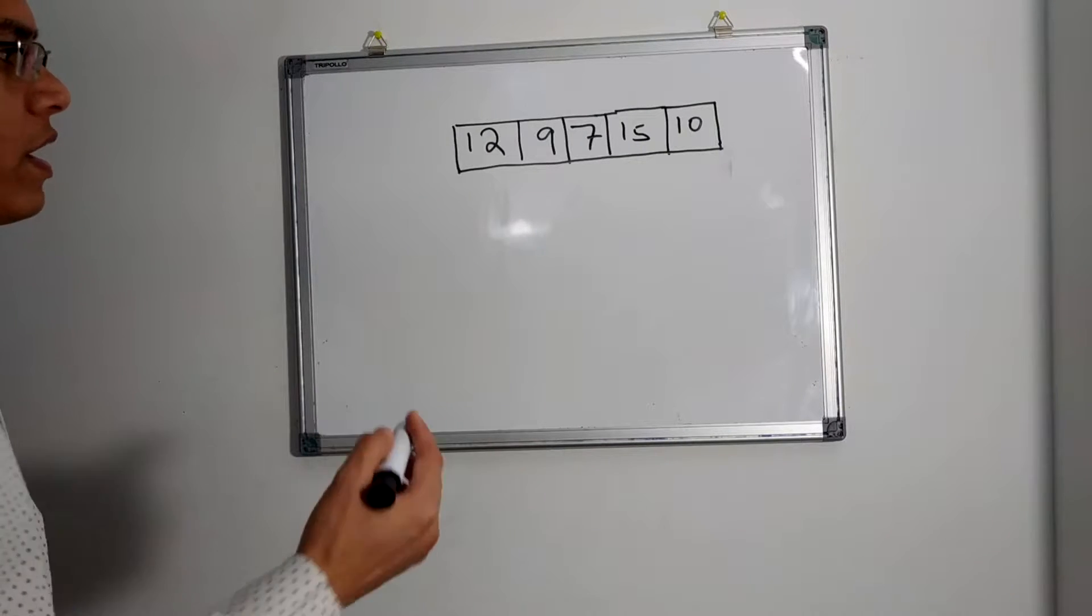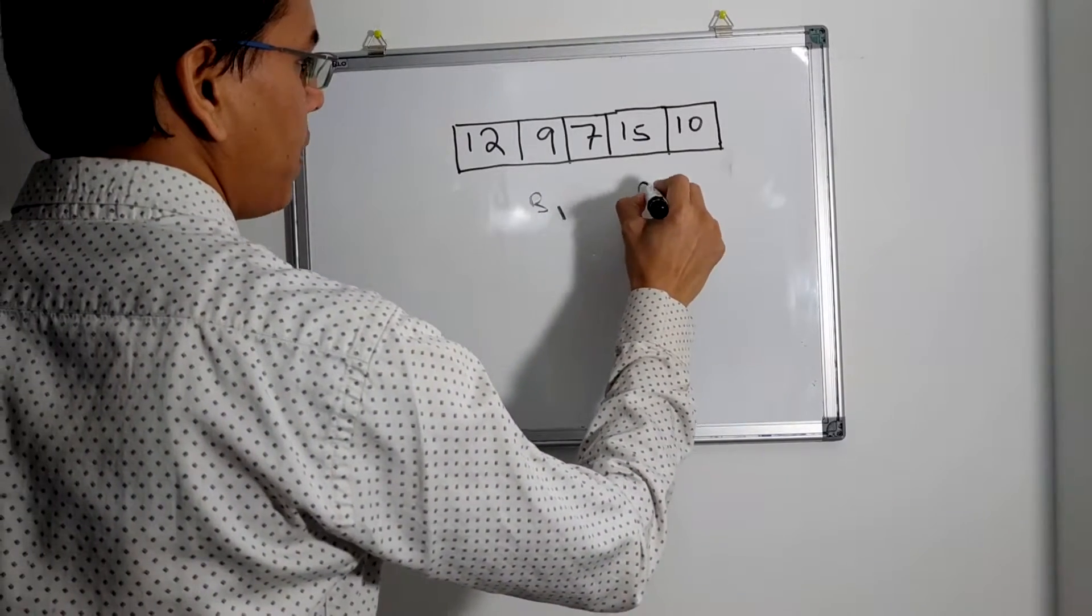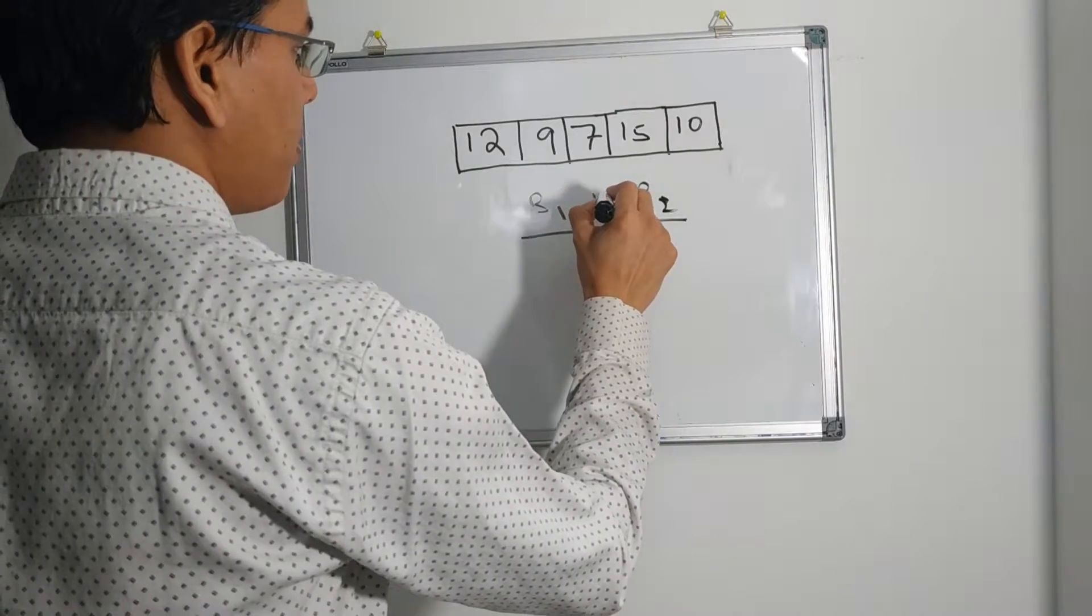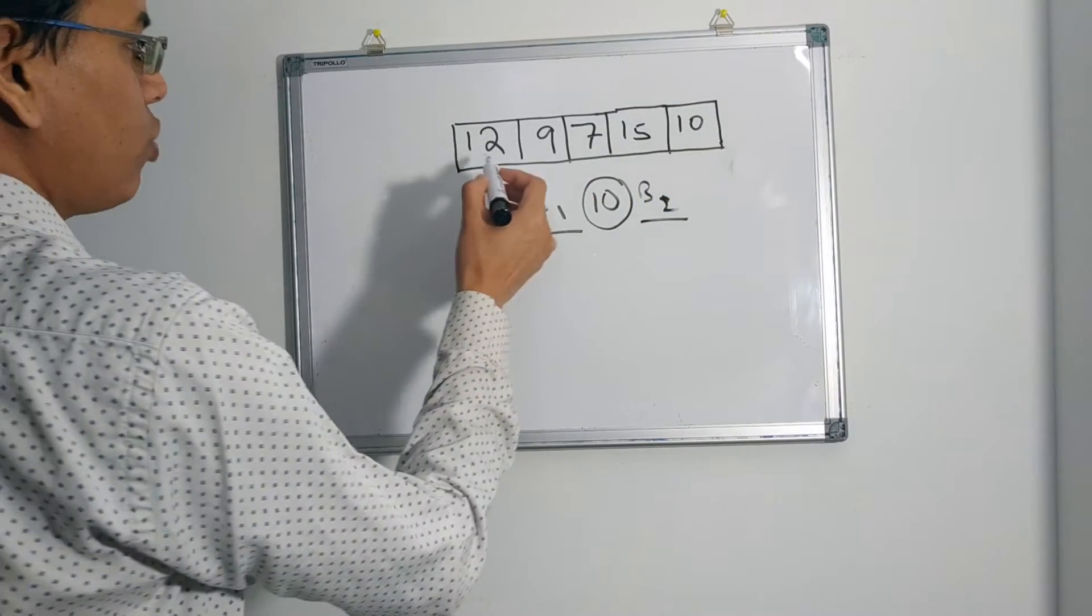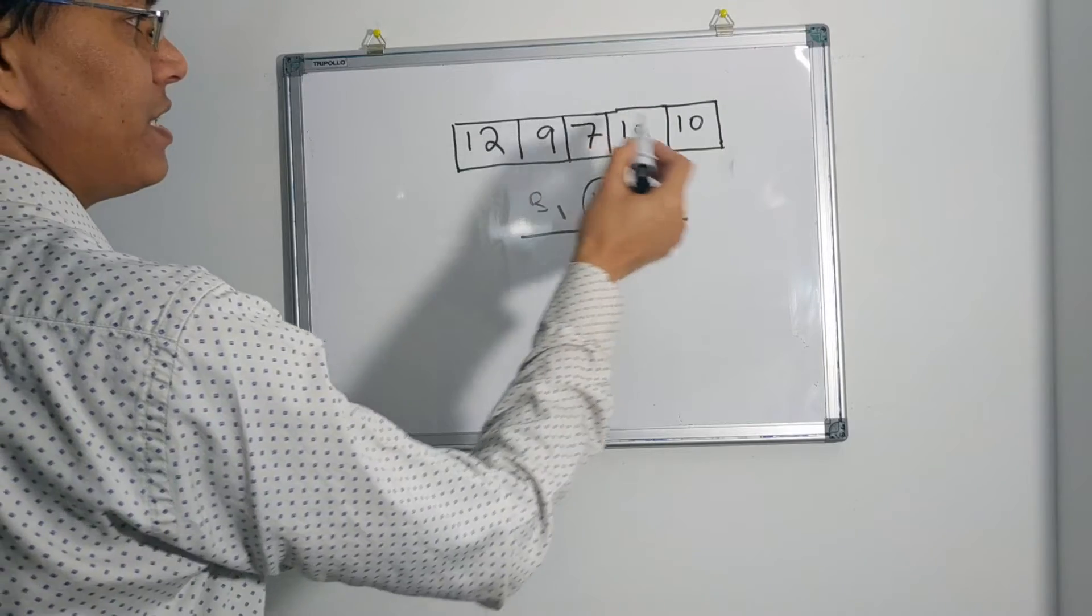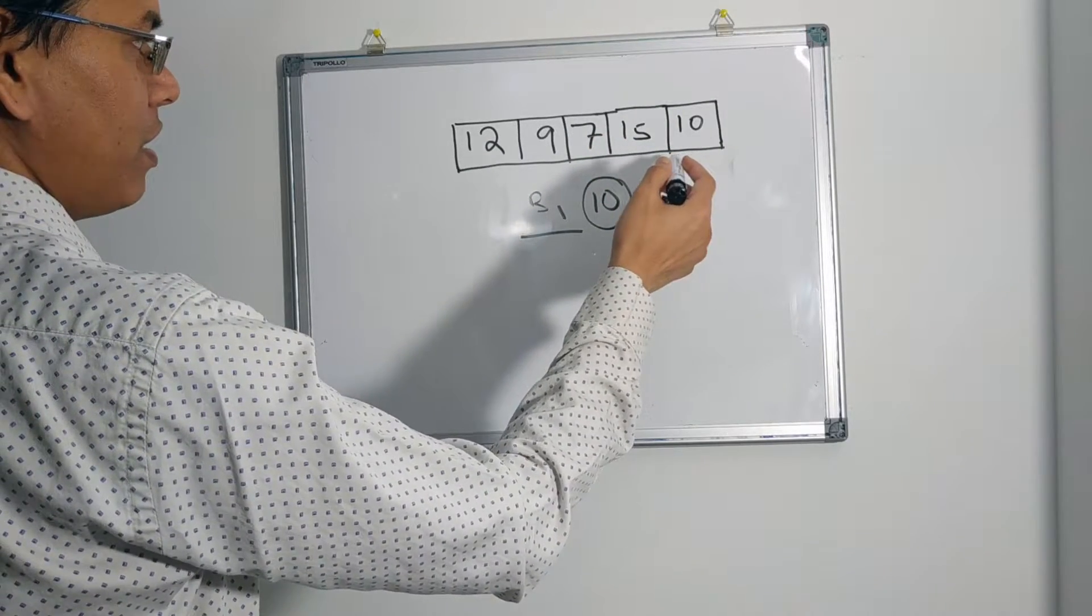We can take two buckets, B1 and B2. 10 is our pivot. We will scan through the array and if the number is less than the given number, which is 10, then we will put it into B1 bucket.